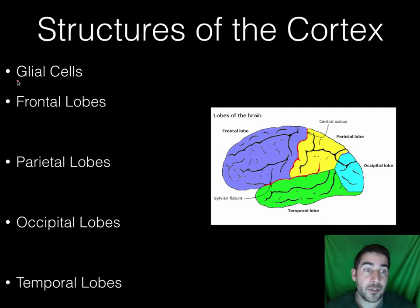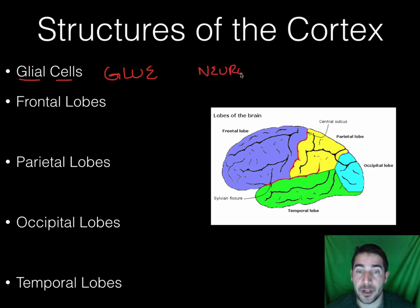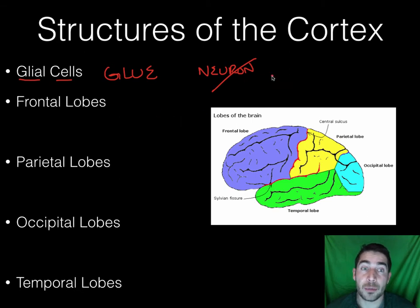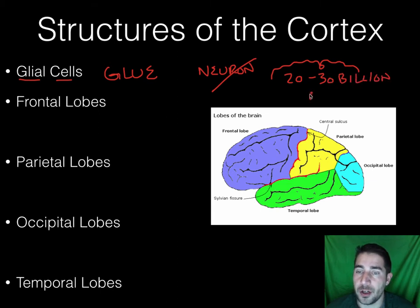The first term we're going to look at is glial cells. Glial cells are like glue cells. They're the other type of cell in your brain that's not a neuron. In your cerebral cortex, which is the outside wrinkly part of your brain, there's over 20 to 30 billion neurons.